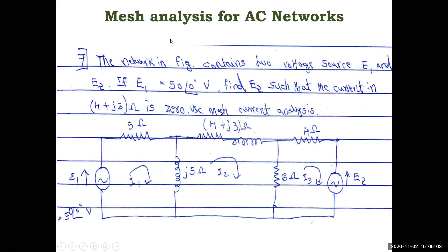The network in the figure contains two voltage sources E1 and E2. E1 = 50∠0° volts. In complex notation we have two forms: magnitude at an angle (polar form) or real part plus imaginary part (rectangular form) — conversion between both is possible using the calculator. The circuit has a 5 Ω resistance, then j5 Ω (inductance, so +j), then 4 + j3 Ω in series, and also 6 Ω and 4 Ω resistors, with voltage source E2.